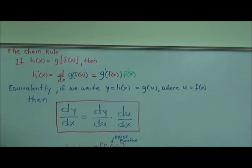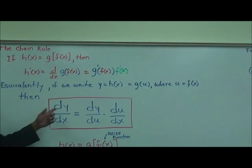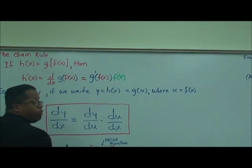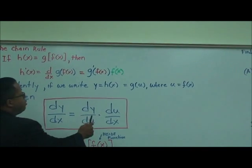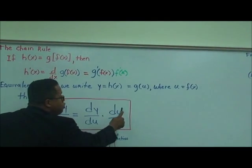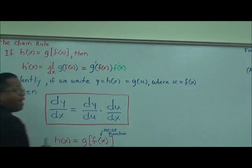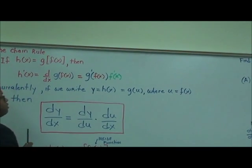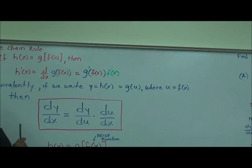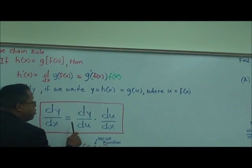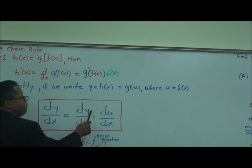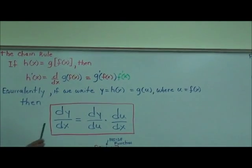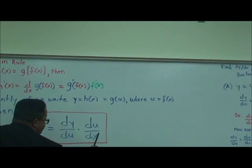dy over dx — the derivative of y with respect to x — is equal to the derivative of y with respect to u, times the derivative of u with respect to x. So the derivative of y with respect to x equals dy/du times du/dx.